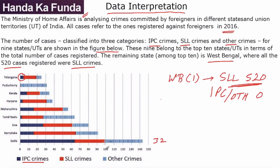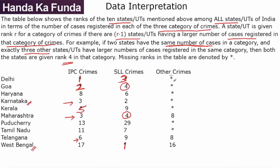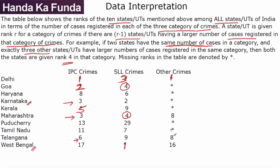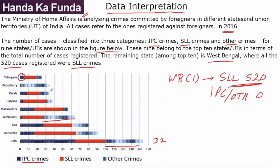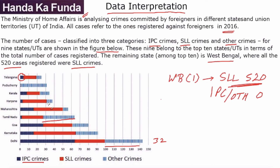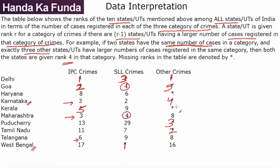Now let's look at other crimes. Very clearly Delhi is the biggest, so Delhi is rank 1. Tamil Nadu is also around 35-ish, making it rank 2. Puducherry is around 31, so Puducherry is rank 3. Karnataka at around 26 is rank 4, and Goa a little below 20 is rank 5. For ranks 6 and 7, Haryana and Kerala — Kerala is bigger so Kerala is rank 6 and Haryana is rank 7. That fills up the entire table.